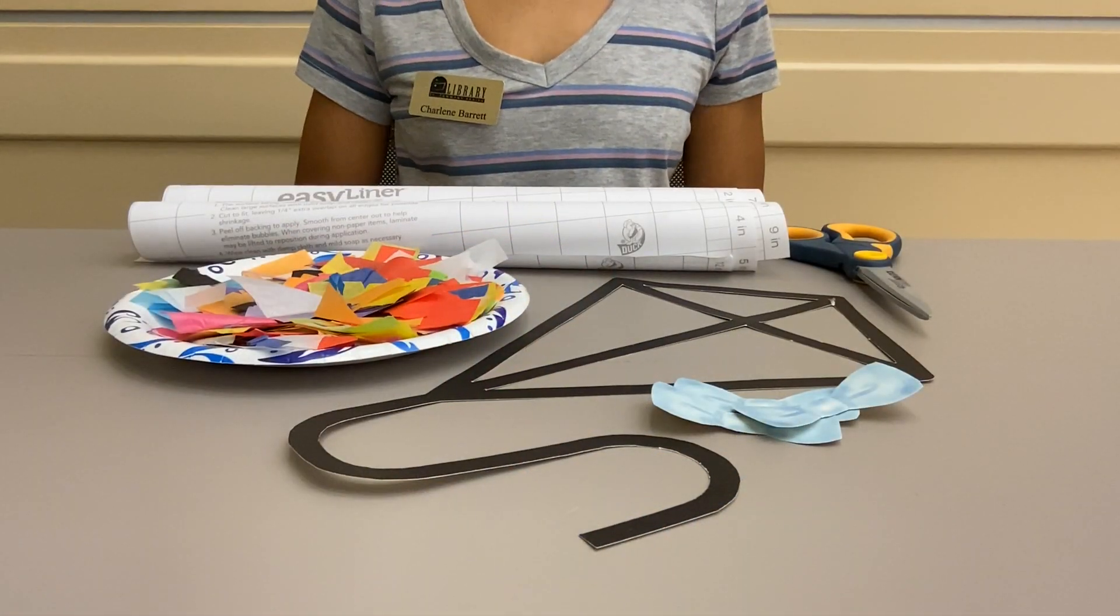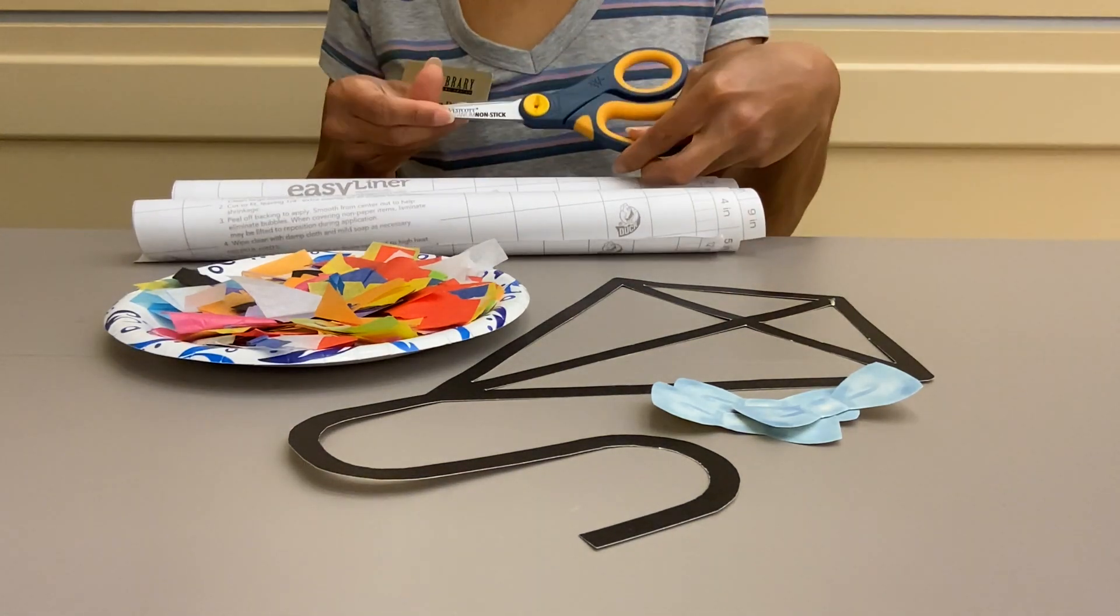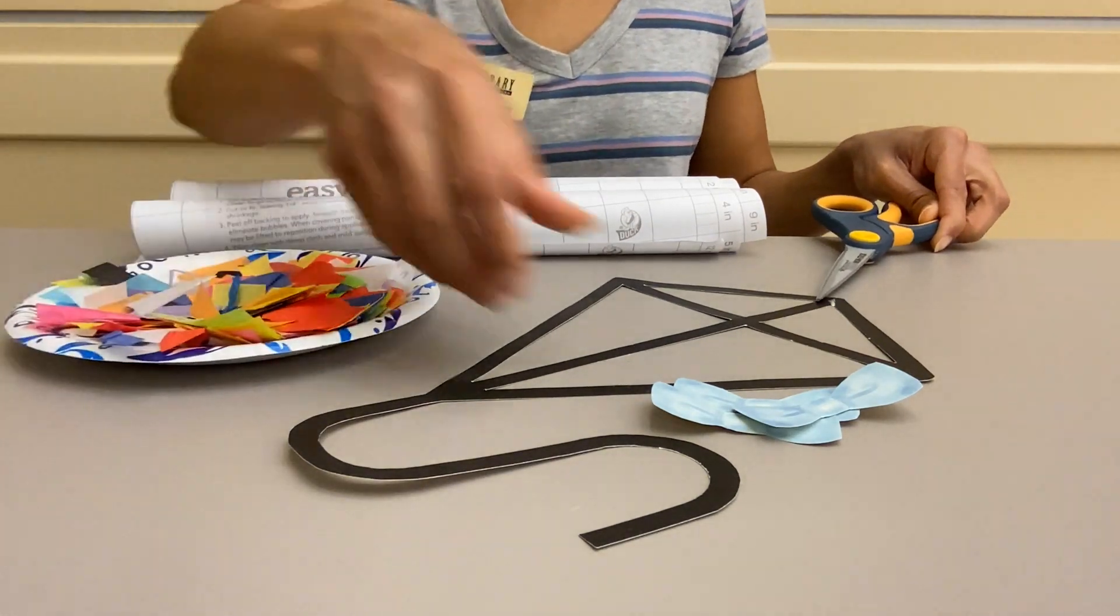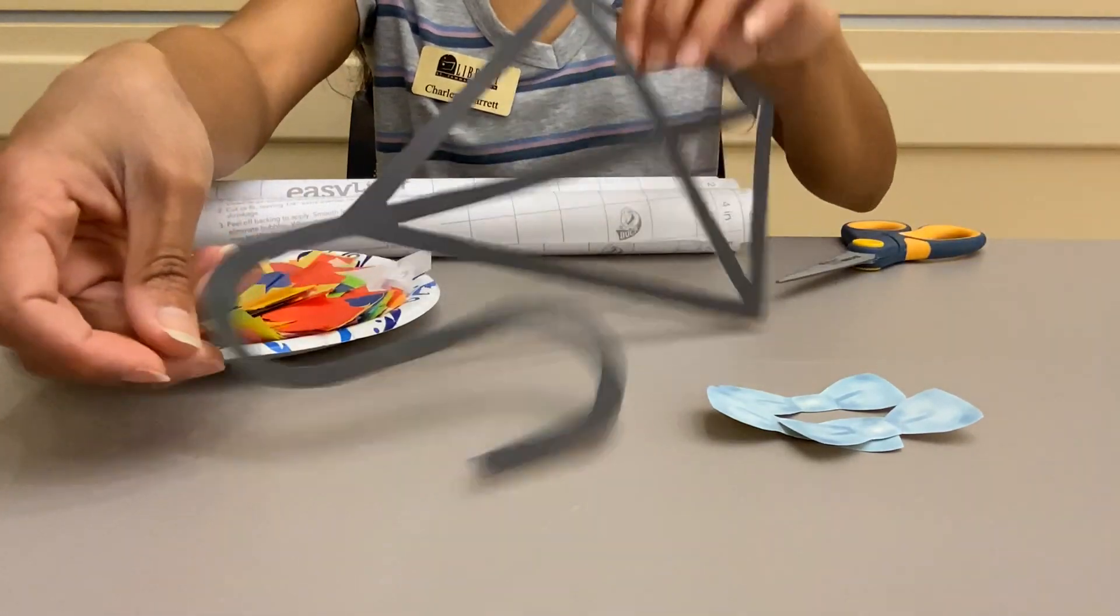The supplies you're going to need are some contact paper, some scissors, some tissue paper cut up into squares, some cut out bows, and a kite outline.